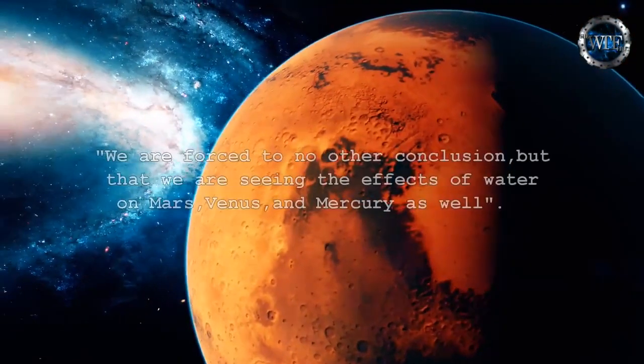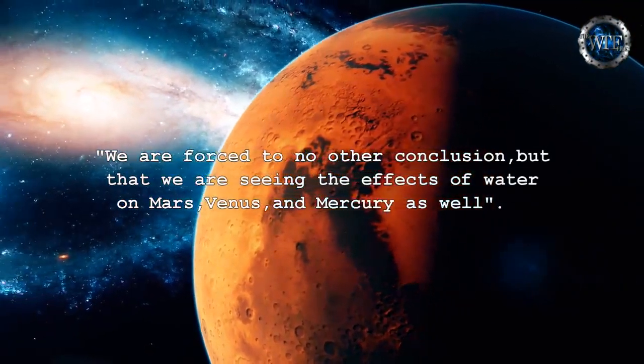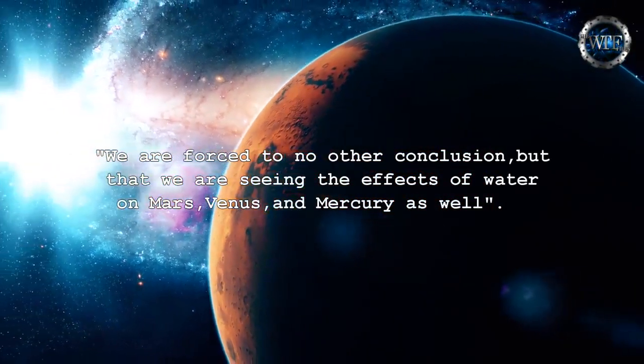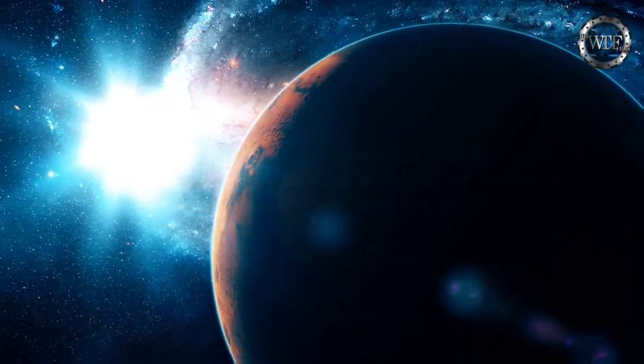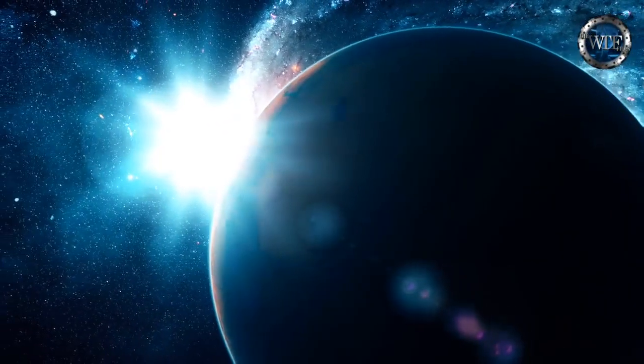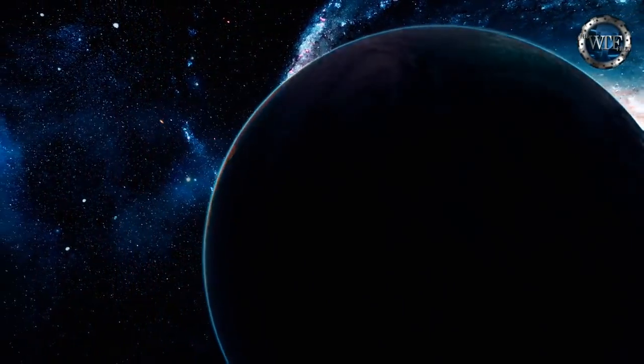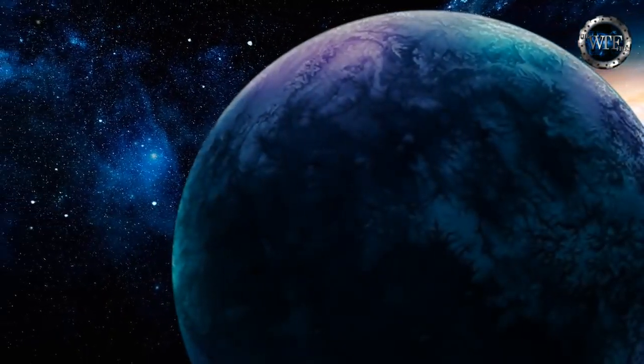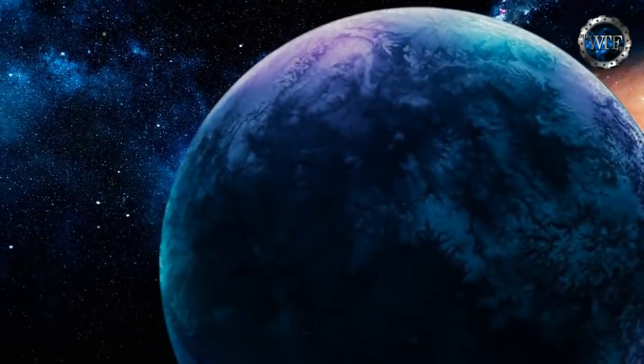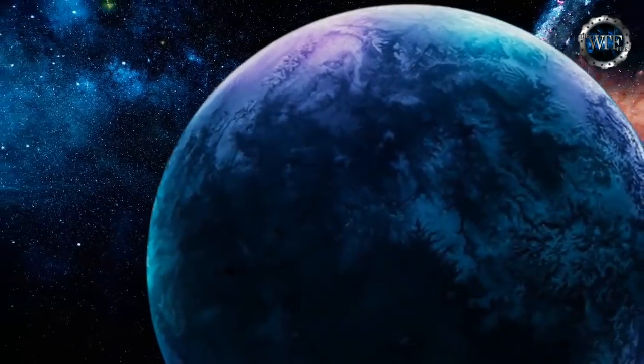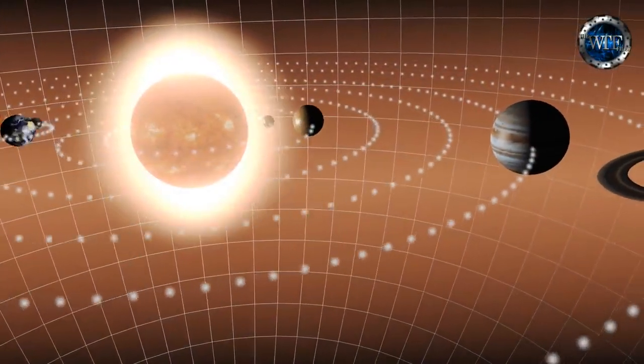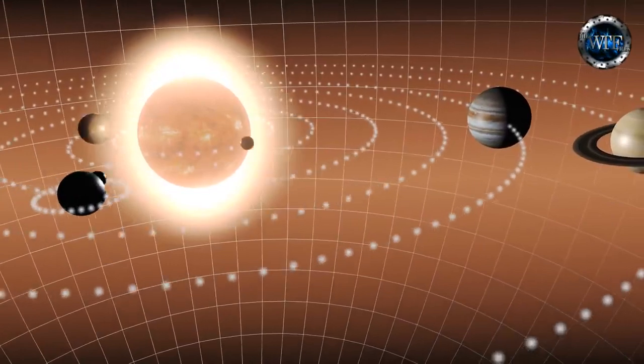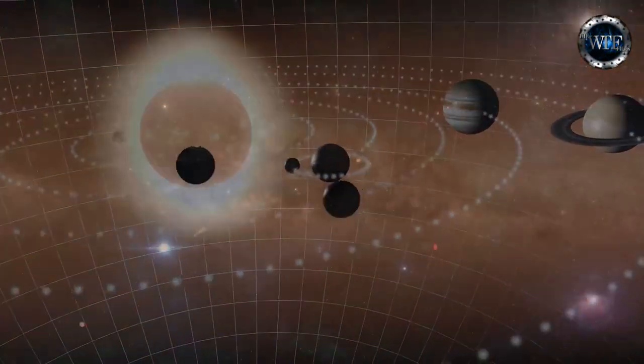The NASA report reads: We are forced to no other conclusion but that we are seeing the effects of water on Mars, Venus, and Mercury as well. NASA also now believes that Mars may have once had enough water to form layers several meters deep over the entire surface of the planet. What was previously believed to be a dry and barren planet unexpectedly emerges as a planet where water once existed in abundance. Mars joins Venus, Mercury, the Earth, and most recently the Earth's moon in corroborating the Sumerian concept of water below the firmament.